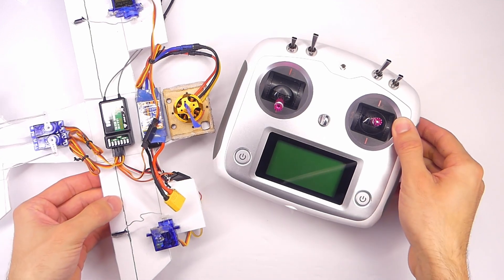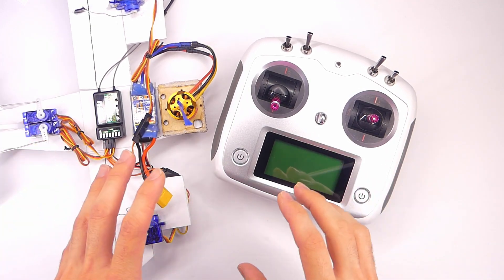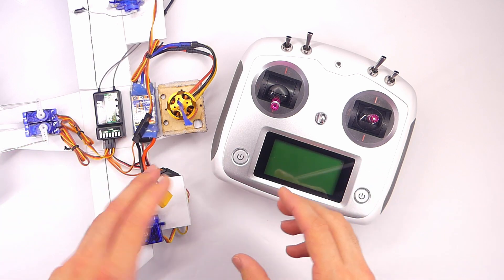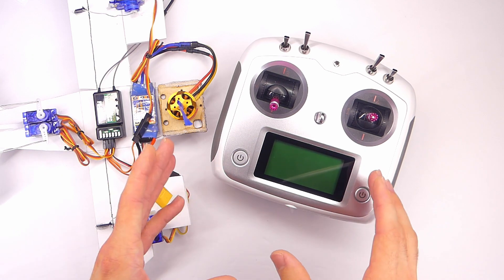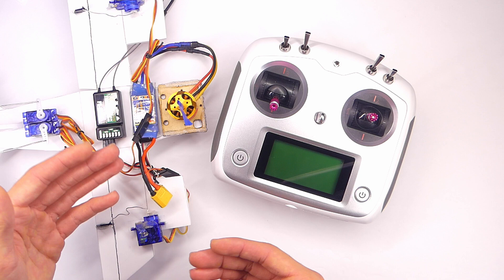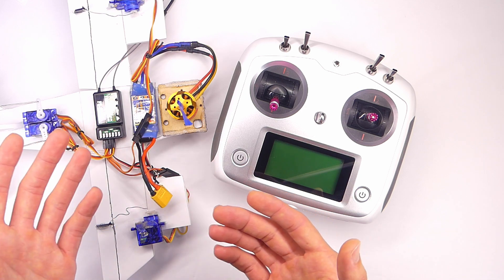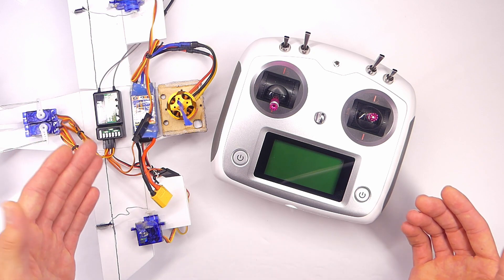Now this is going to be for an airplane. Typically with a quadcopter you'll set up all the failsafe stuff on Betaflight on your configurator for your flight controller. So in this case I'm going to show you how to set it up for an airplane. You can set this up for a quadcopter in addition to doing it on Betaflight. But honestly I don't think it really makes a difference. If you know something about that let me know in the comments.